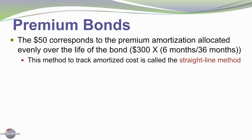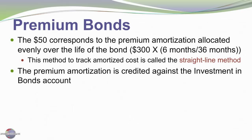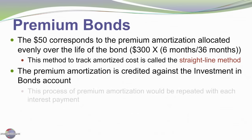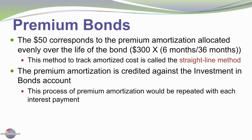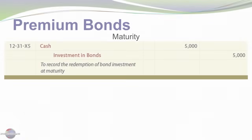In a subsequent chapter, we'll look at the effective interest method of amortization as well. At maturity, we get the $5,000 back: debit cash, credit investment in bonds $5,000. That $5,000 is the right amount for the investment in bonds at that point, because it started at $5,300 but we took $50 out of that account every six months for three years — $300 in total — so we're down to $5,000.